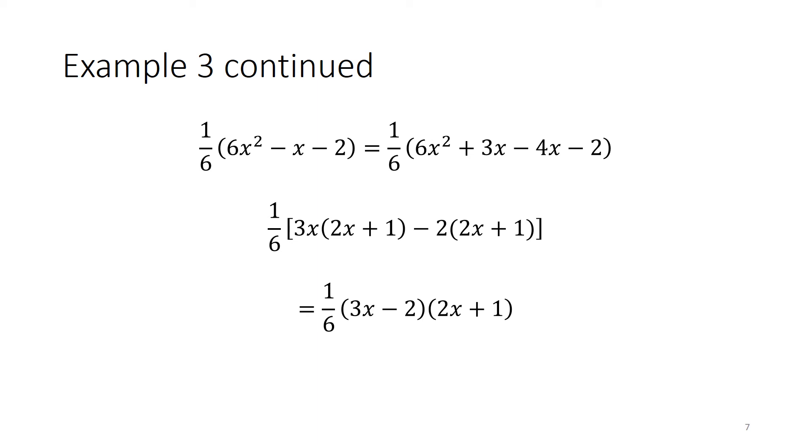And from the second pair, we can factor out a negative 2, which also leaves us with a quantity 2x plus 1. This quantity 2x plus 1 is shared among these terms, so we may factor that out as well, and we have our factorization as 1 sixth times the quantity 3x minus 2 times the quantity 2x plus 1.